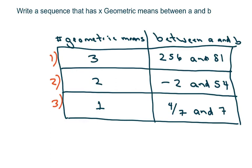So the first one we're going to do is three geometric means between 256 and 81. So basically, what we're going to have is 256, and we need three in between. So that's going to be 1, 2, 3, and our last term is 81.